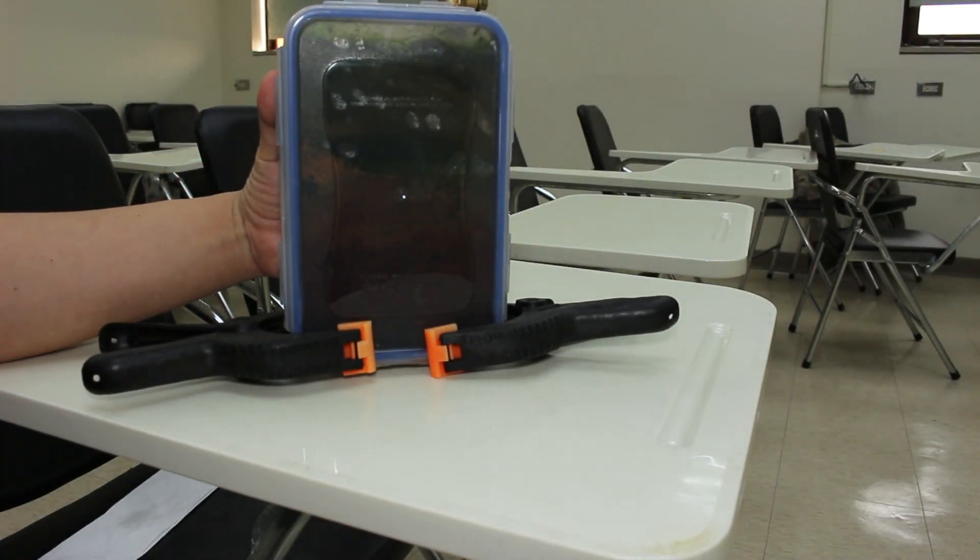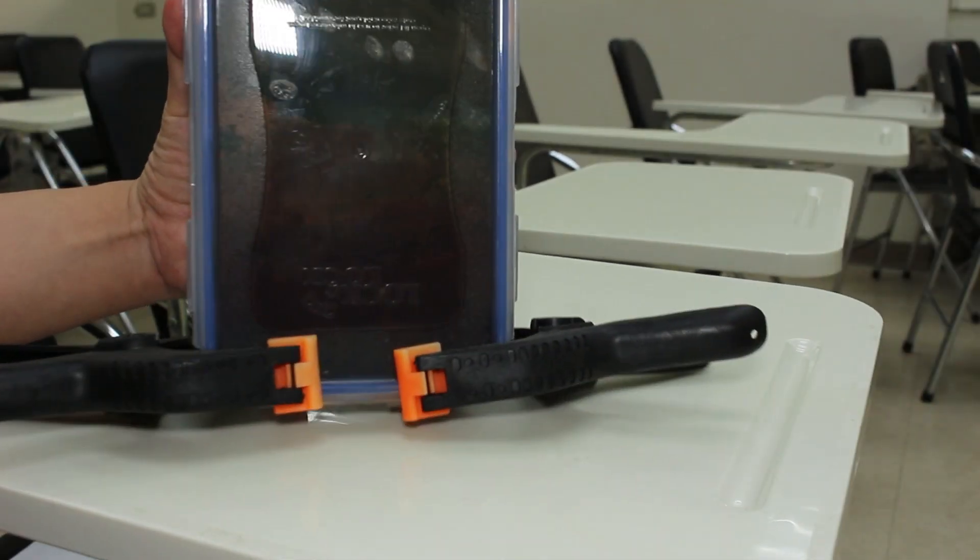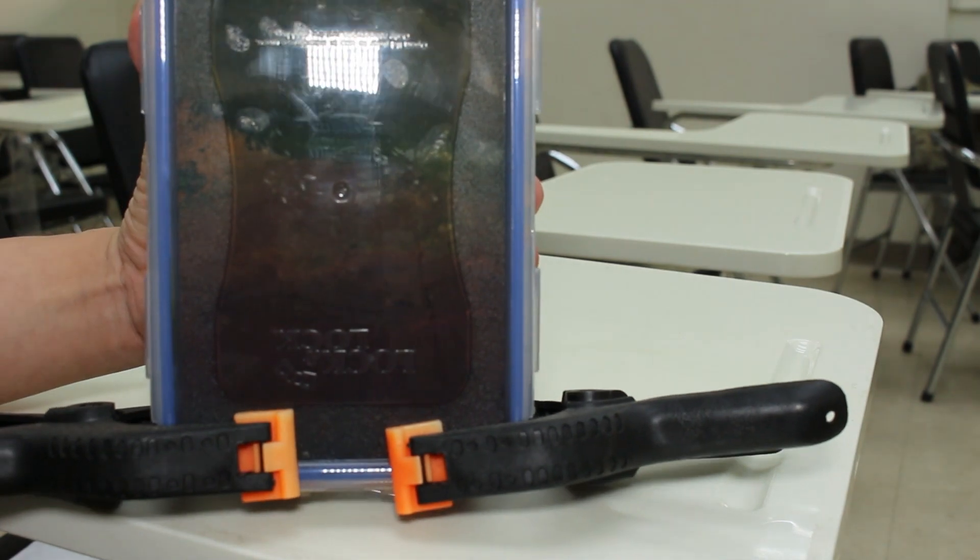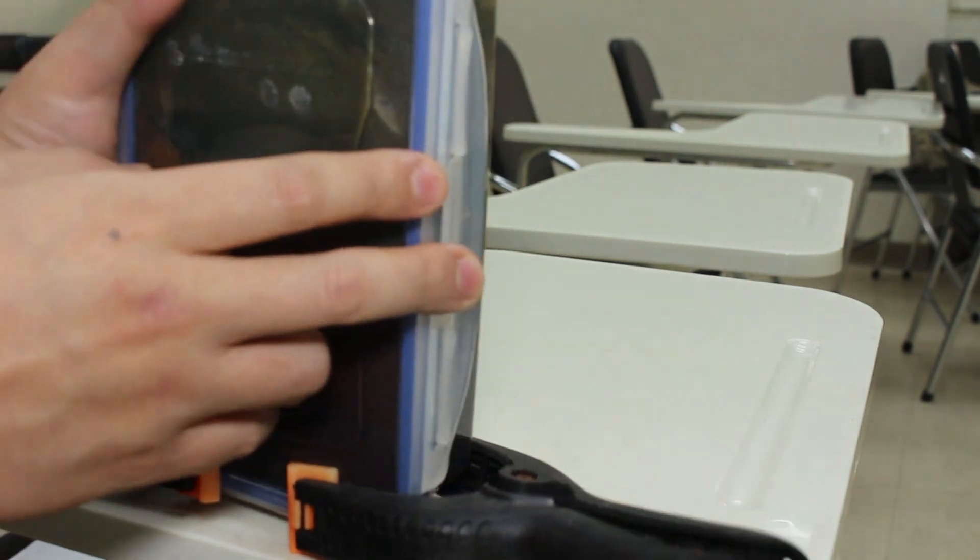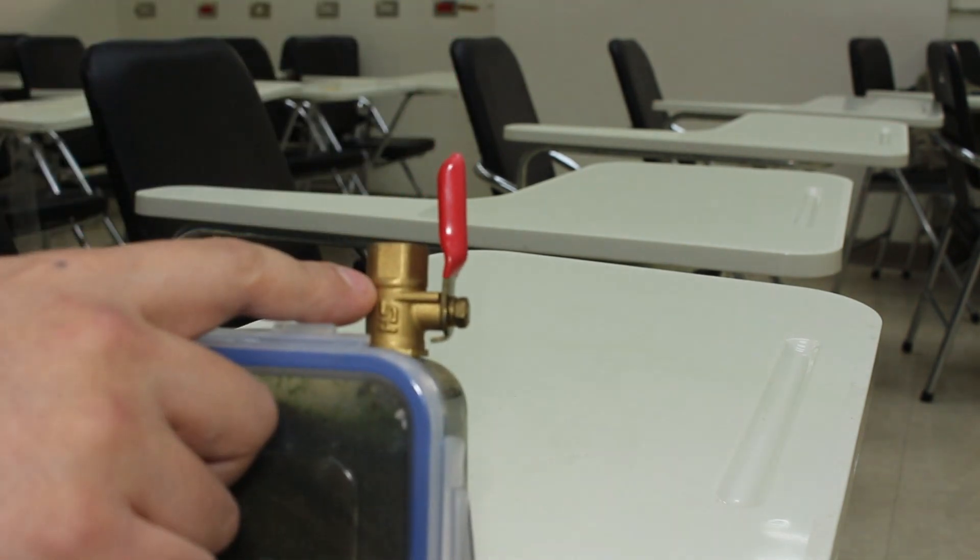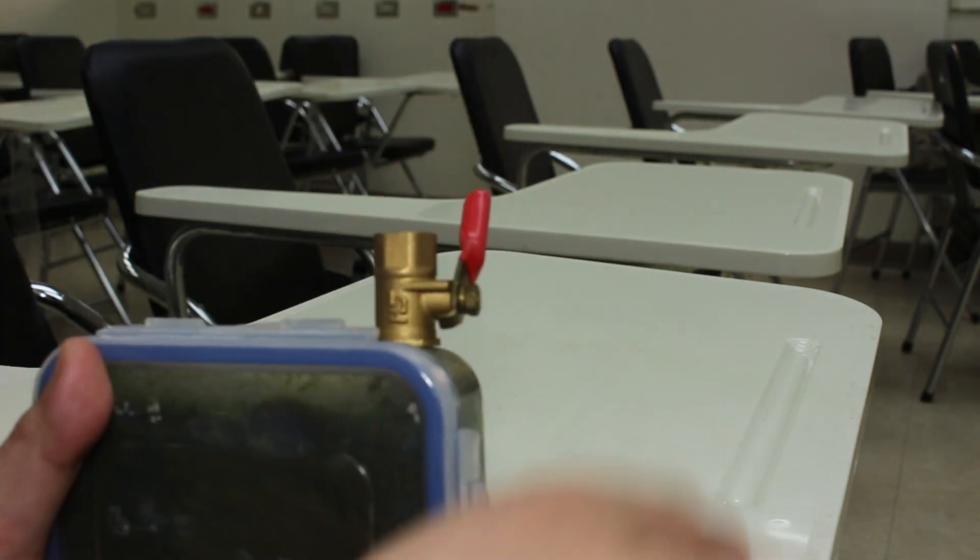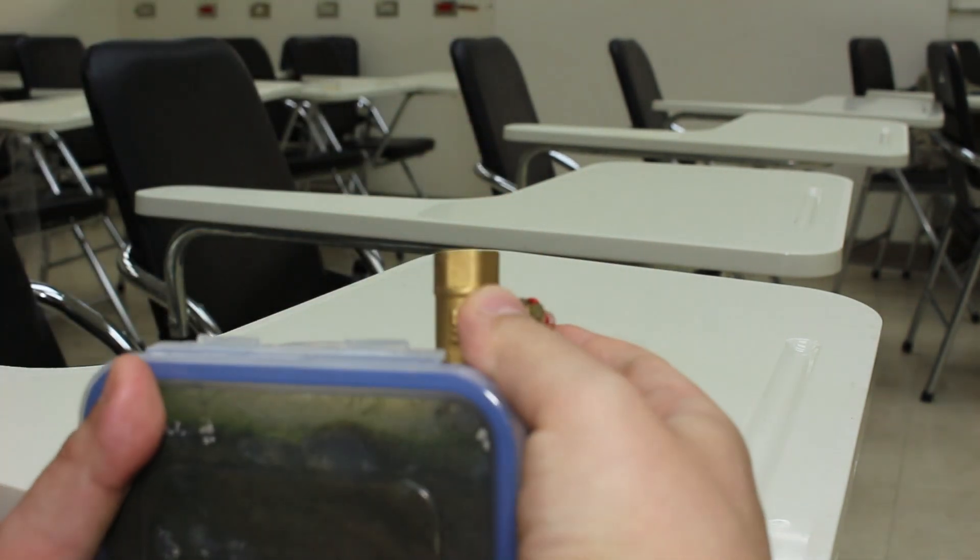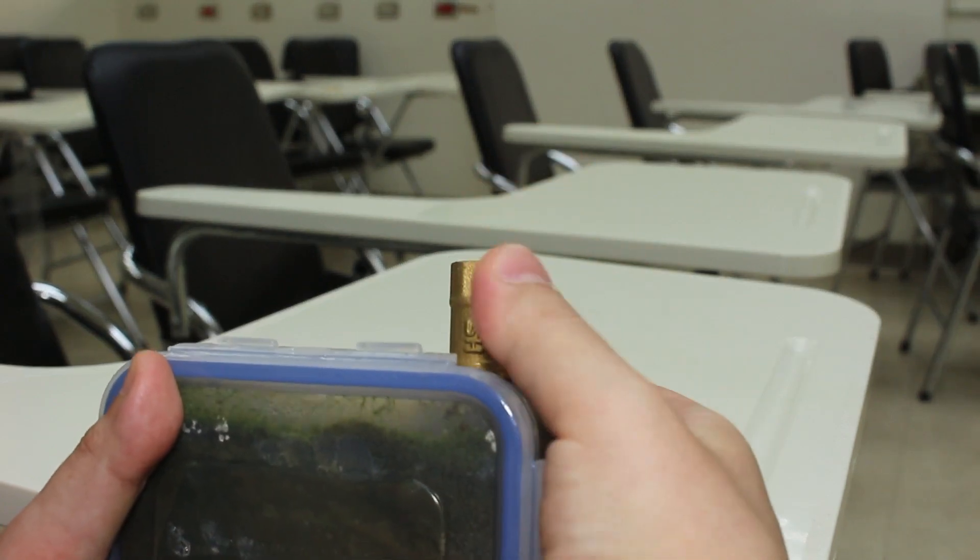So I came up with stuff like this. This is basically a box, a plastic box we use in the kitchen. It's a kitchenware you use to preserve food. I just use it vertically and do the same thing as basically a Winogradsky column inside this container.